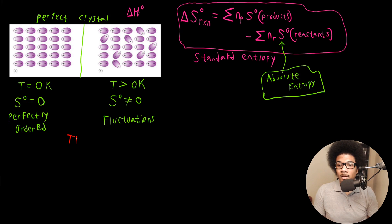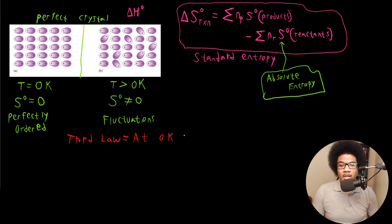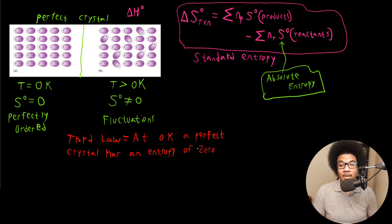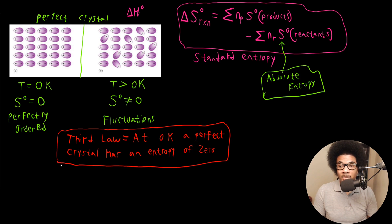This is actually a statement of the third law of thermodynamics. The third law of thermodynamics states that at zero Kelvin, a perfect crystal has an entropy of zero. This is huge because every other thermodynamic variable — we don't have a defined lower bound. Entropy is different: we have this well-defined lower bound that allows us to define an absolute entropy, whereas we can't define an absolute enthalpy or an absolute free energy.